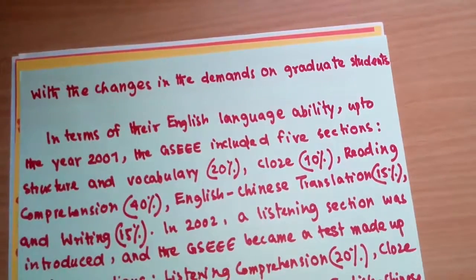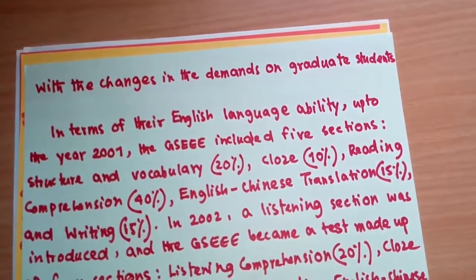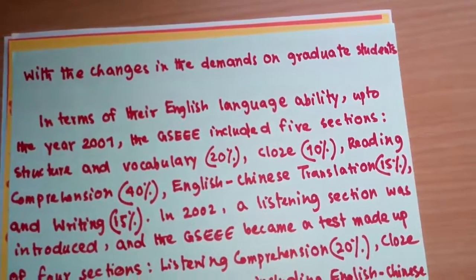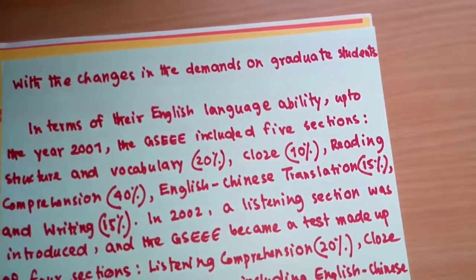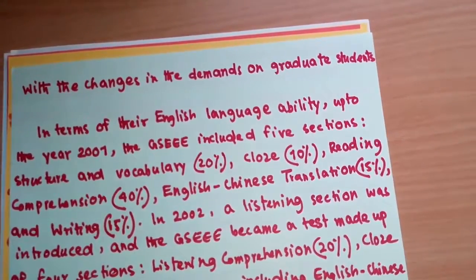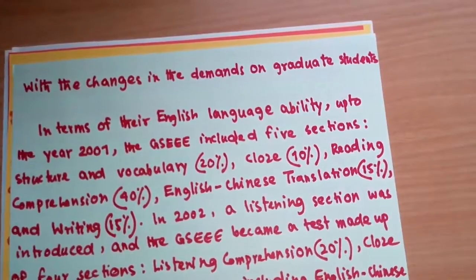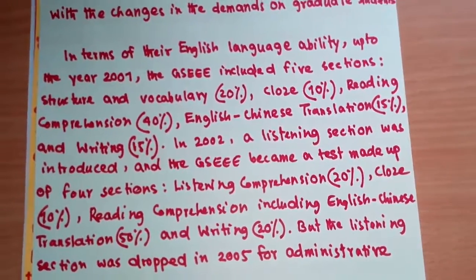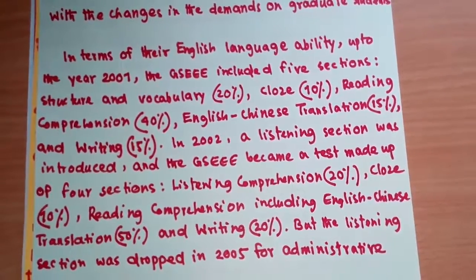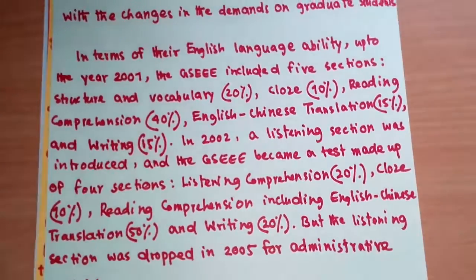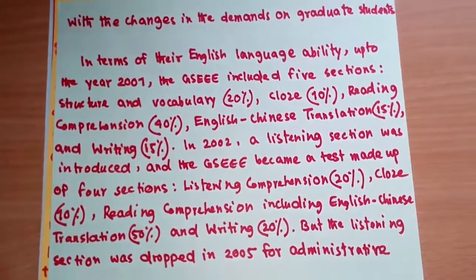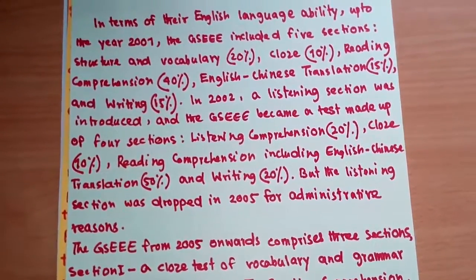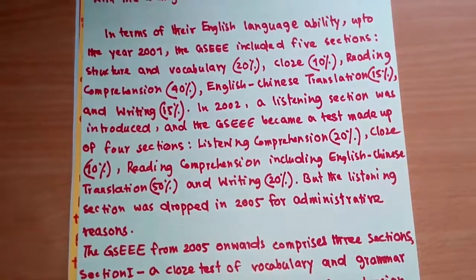Up to the year 2001, the GSEEE included five sections: structure and vocabulary 20%, cloze 10%, reading comprehension 40%, English-Chinese translation 15%, and writing 15%. In 2002, a listening section was introduced and the GSEEE became four sections: listening comprehension 20%, cloze 10%, reading comprehension including English-Chinese translation 50%, and writing 20%. However, the listening section was dropped in 2005.